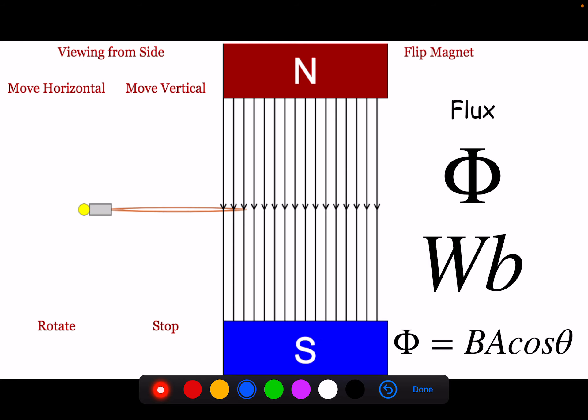So we have flux, the symbol is phi, measured in a unit called Webers. And just like our solar flux, it depends on the strength of the magnet, that's like our solar constant, multiplied by the area of the coil of wires, multiplied by the angle between those two.